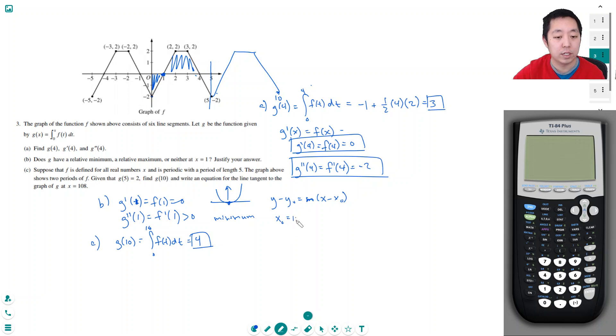I know x naught has to equal 108. y naught, where the point hits the graph, is equal to g of 108, that's the integral from 0 to 108 of f(t) dt. Now I'm going to have to reason this out a little bit. When I go out 108, each one has a period of 5, so that means I'm going to go over the area up to like 100.